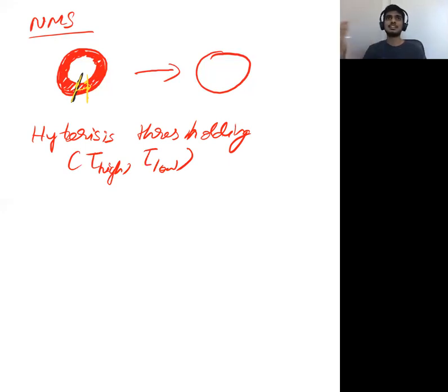The problem with the general, the normal thresholding is if you set a threshold to a lower value, then unwanted edges get detected. And if you set the thresholding value too high, then you would have lost many of the details. You don't want that to happen. That's why you use something called as Hysteresis Thresholding.